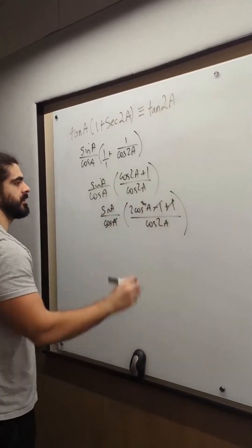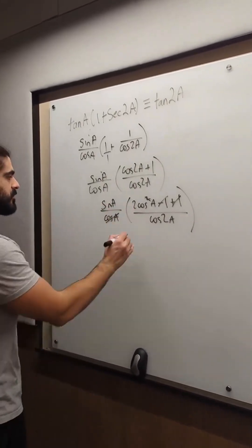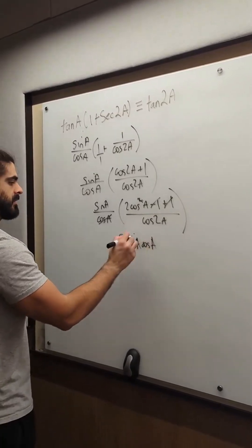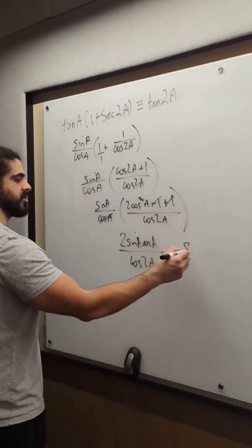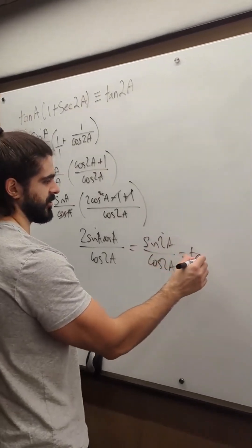So I have, here I have 2 sin a cos a divided by cos 2a. That's sine 2a. And that is tan 2a.